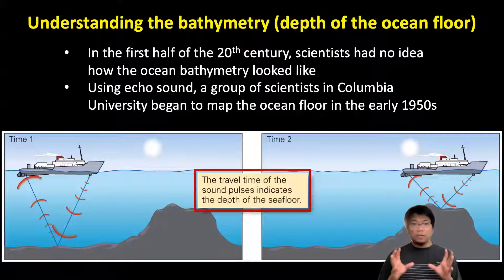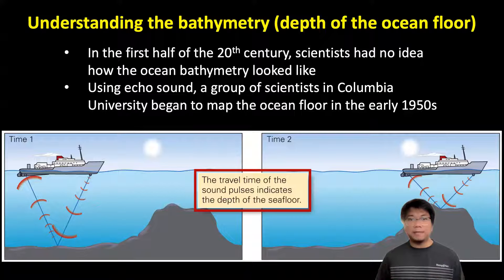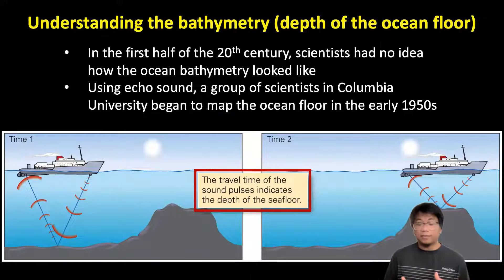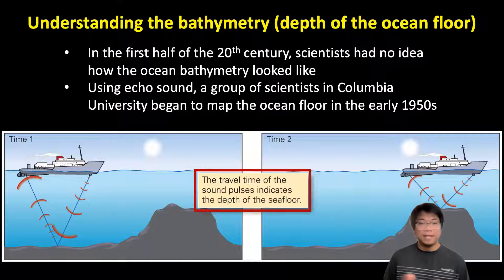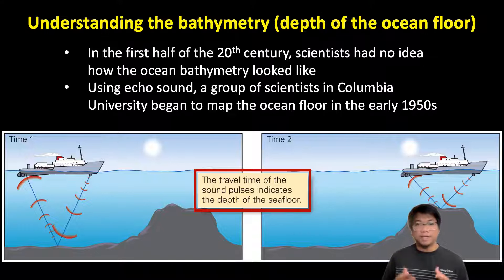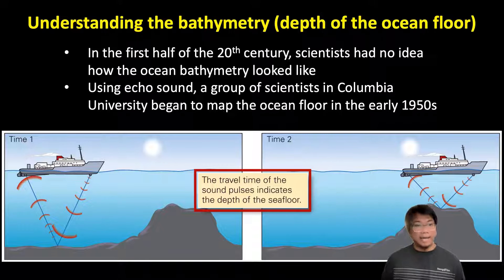Bathymetry is simply a measurement of the depth of the ocean floor. It's actually pretty amazing that in the first half of the 20th century, we simply had no idea how the ocean bathymetry looked like. Not until the early 1950s, when a group of scientists at Columbia University began to map the ocean floor using echo sounding.